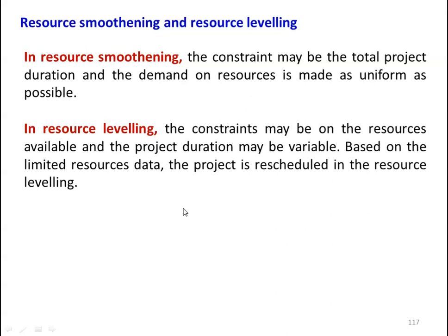In resource leveling, the constraint may be on the resources available. For example, the number of manpower available or number of man hours available is restricted. In that case, we can change the project duration — the project duration may be variable. Based on the limited resources data, the project is rescheduled in resource leveling. So in resource smoothening the project duration cannot be altered; we have to adjust the requirement of resources. In resource leveling, the availability of resources is restricted, so we can extend the duration of the project work.